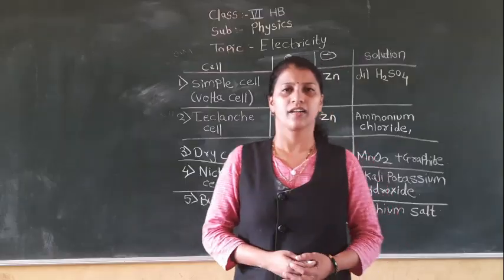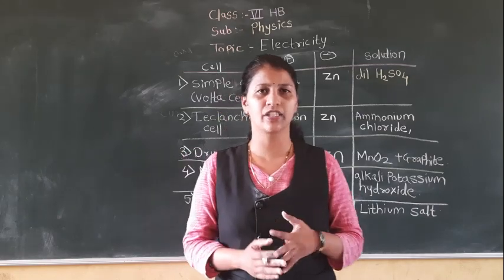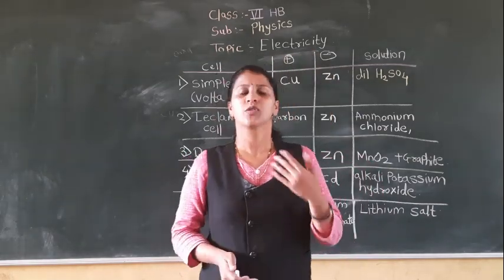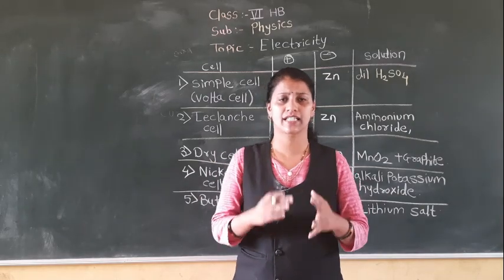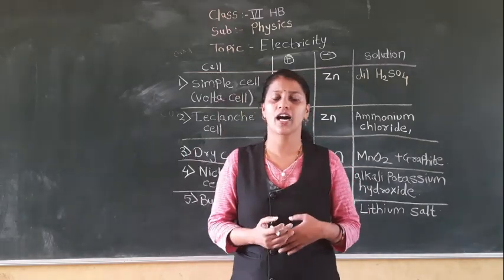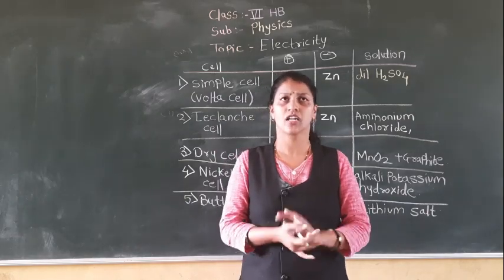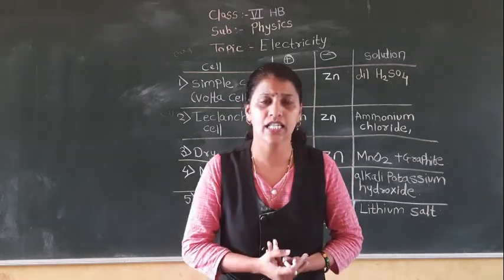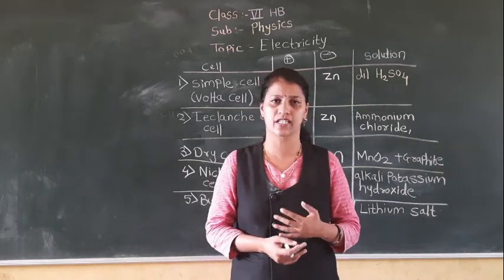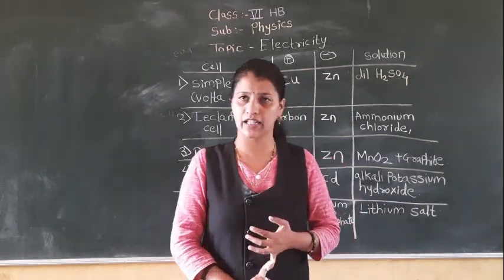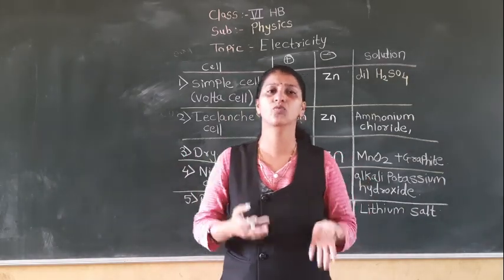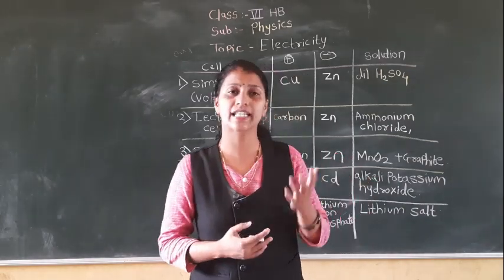Now we are going to discuss which are the sources of electricity. Batteries and generators are used to produce electricity. If the instrument is very small we use a cell. If you want a larger amount of electricity we use a battery. In our house we use electric power from the electric power station, or if there is a power cut we use a generator or inverter.